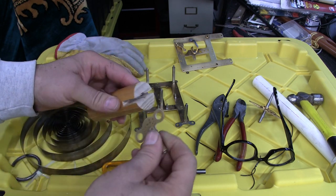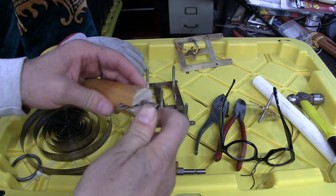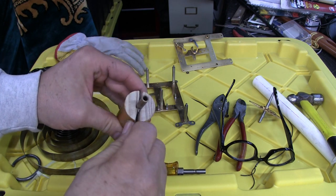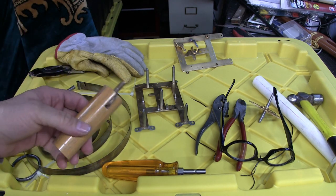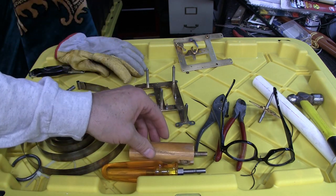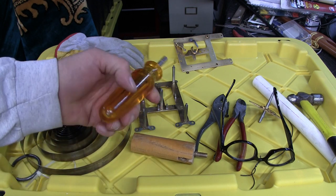I'll quickly show you how I do that to take out the mainspring without a $40 set of specialty tools. The letdown tool is handy if you're going to be working on clocks.